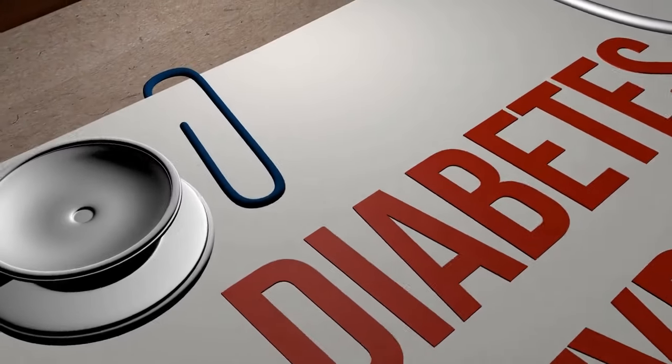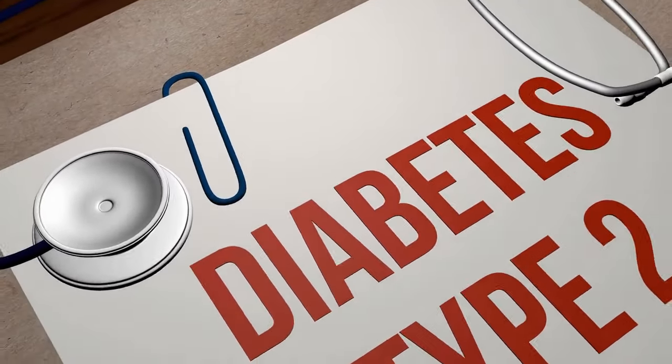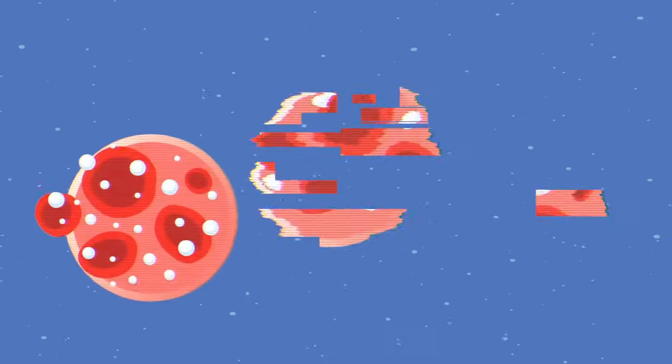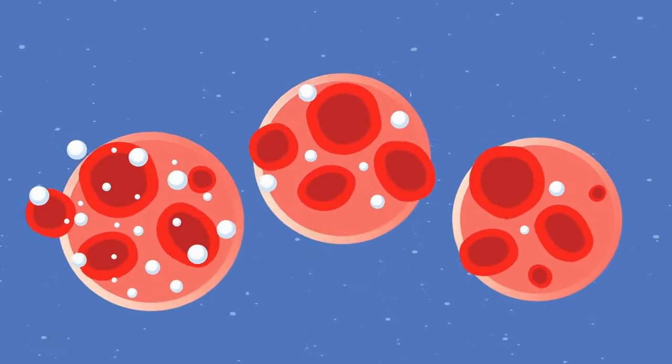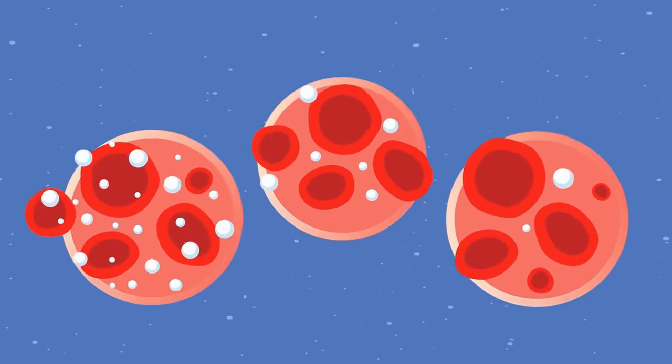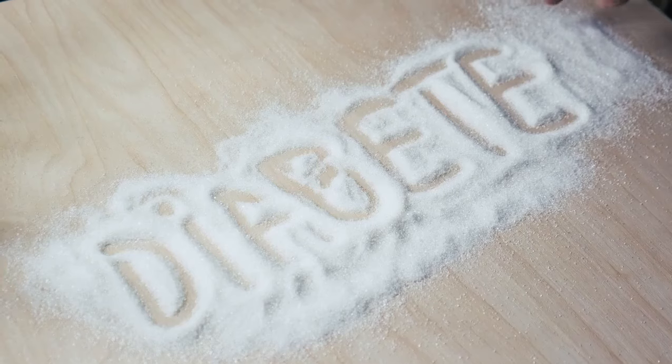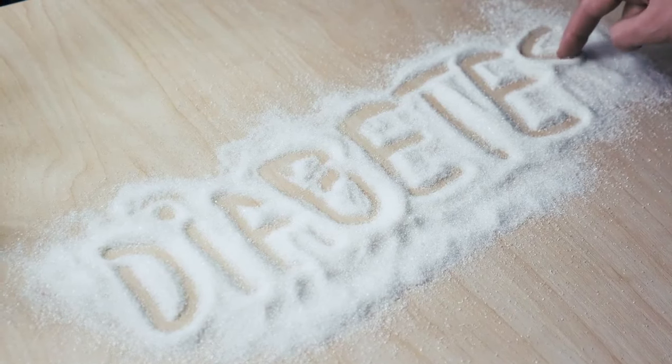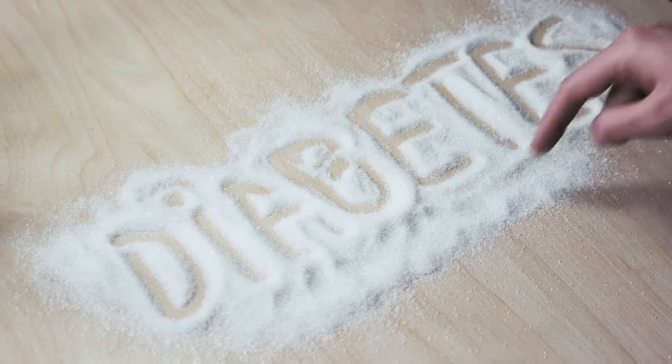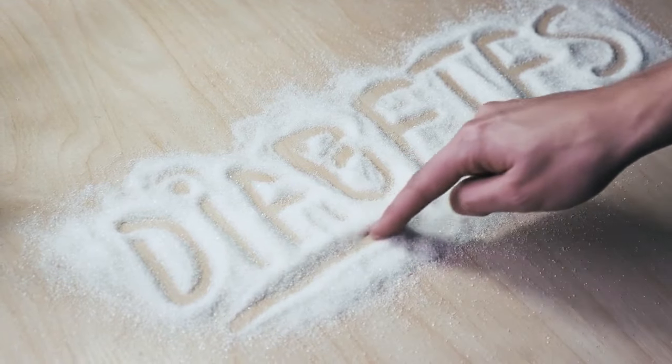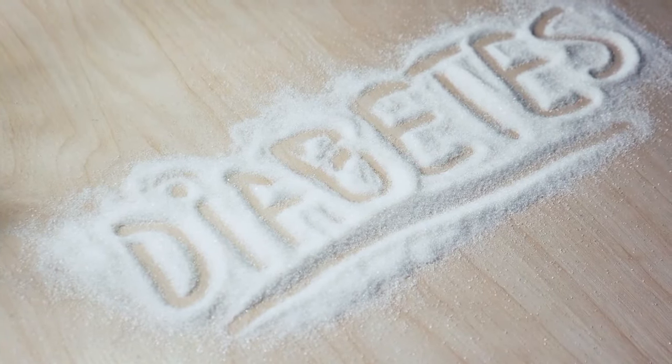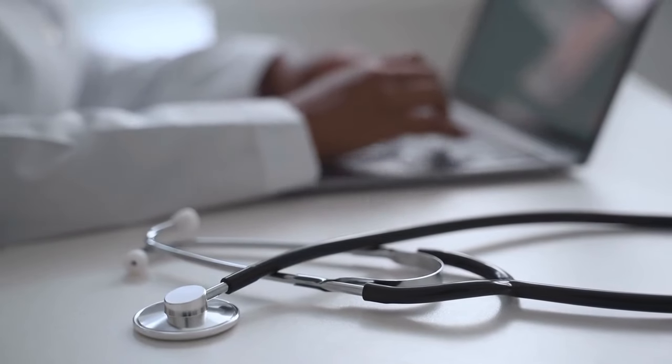What is diabetes? Diabetes is a chronic medical condition characterized by high levels of glucose, sugar, in the blood. It occurs when the body cannot produce enough insulin, a hormone that regulates blood sugar, or cannot effectively use the insulin it produces. There are mainly two types of diabetes.